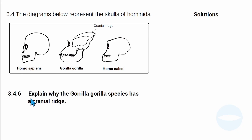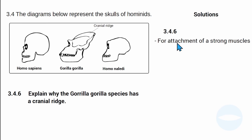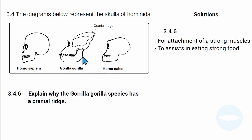The last question asks: explain why Gorilla gorilla has cranial ridges. The cranial ridge is the bone attached to strong muscles that assist with chewing. Gorilla gorilla has cranial ridges for the attachment of these strong chewing muscles, because the gorilla does not eat soft food and requires powerful jaw muscles to chew hard food.